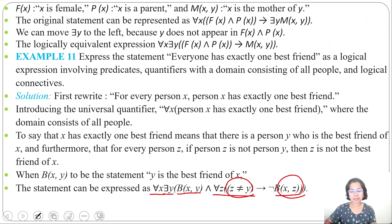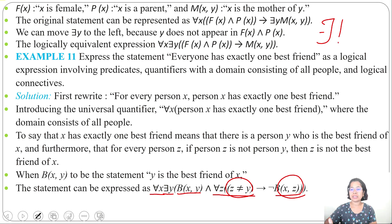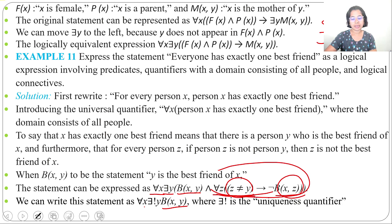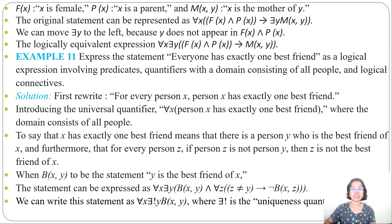This statement can also be expressed using the uniqueness quantifier, written as '∃!' meaning 'there exists exactly one'. So you can write: for all X, there exists exactly one Y such that B(X, Y) — meaning for every person X, there is exactly one person Y such that Y is the best friend of X. Using the uniqueness quantifier, you don't need to include the variable Z. I already discussed the uniqueness quantifier — just go through the previous lecture.